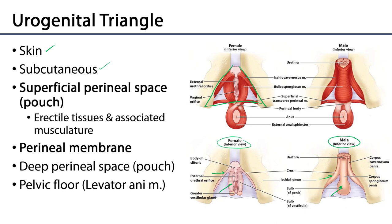Upon these erectile tissues we can see specialized muscles. Laterally, on elements of the corpus cavernosum, we have ischiocavernosus muscles. And on the corpus spongiosum we have the bulbospongiosus muscles. These are all within that superficial perineal space.